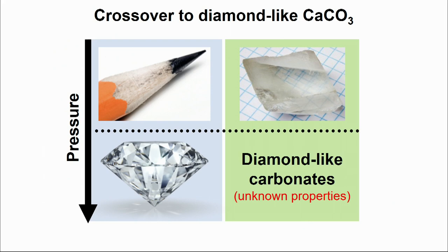Think of carbon. Its low and high-pressure forms are very distinct in chemical and physical properties. Is it also the case for carbonates? Well, we generally don't know the physical and chemical properties of these diamond-like carbonates. It is reasonable to expect that because of the crystal chemical similarities with diamond, they may share some of its unique properties as well.